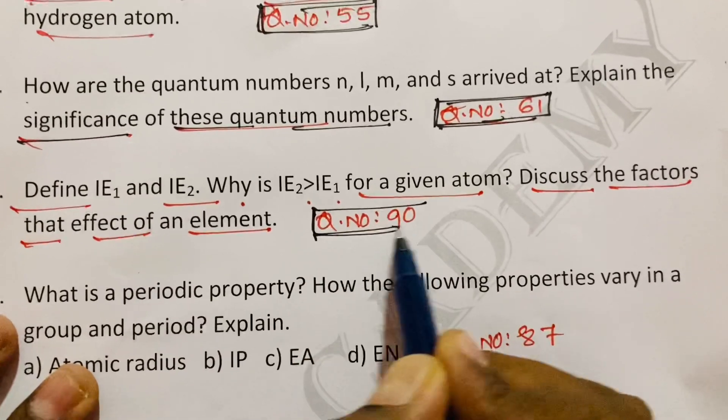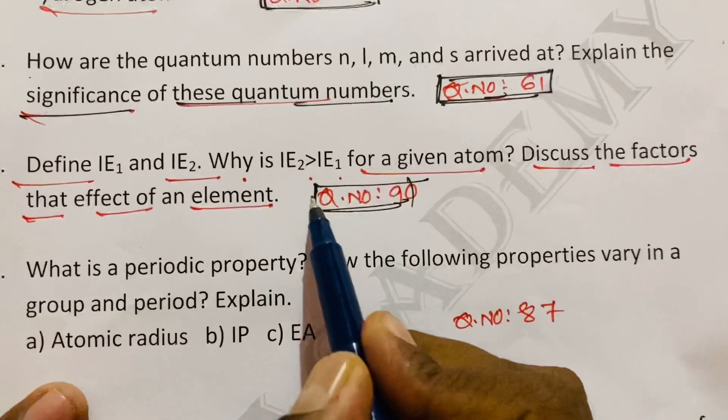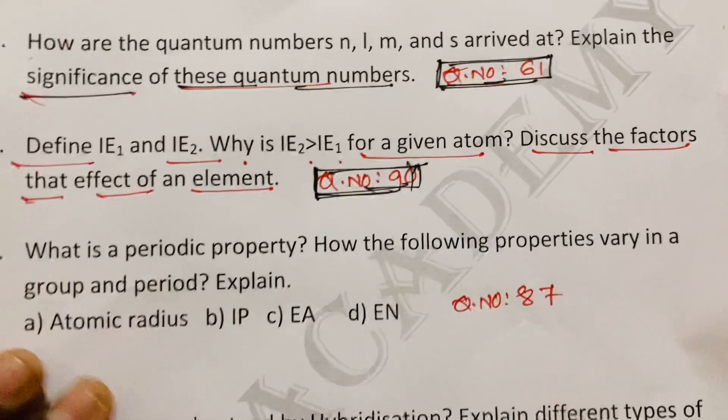Question number 90 from classification of elements. Classification of elements of periodic table. That belongs to question number 90. Next question.